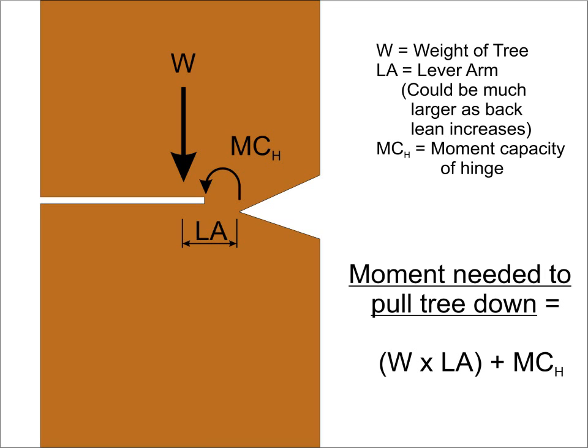On a large trunk, initiating a fall requires overcoming two forces. One is the weight of the tree. If the tree's center of gravity is well behind the hinge, it can take a lot of force to lift that weight. The second force is the strength of the hinge itself. Assuming it is eleven and a half inches wide and an inch and a half thick, trying to get a hinge to bend is equivalent to trying to break a piece of two by twelve lumber.